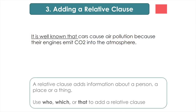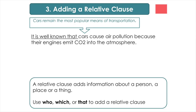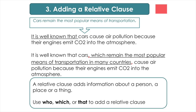But if your English is advanced enough, you could add a relative clause to this sentence. Relative clauses help us give extra information about a person, a place, or a thing. We do this by using relative pronouns like who, which, and that. I want to add a bit more information about cars and say that they remain the most popular means of transportation. Here is our new sentence: it's well known that cars, which remain the most popular means of transportation in many countries, cause air pollution because their engines emit CO2 into the atmosphere. Pay attention to commas — the clause we've just added is not necessary here, it simply adds extra information. That's why we put commas before and after the relative clause.